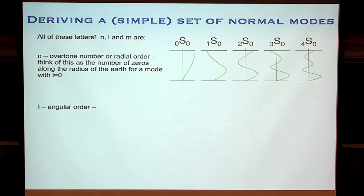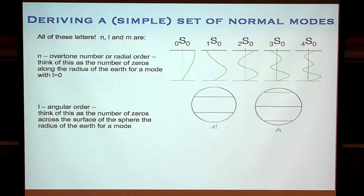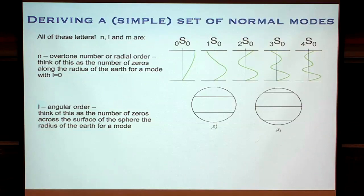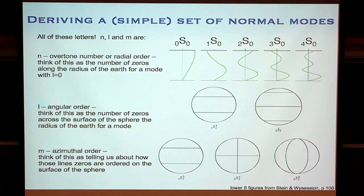L is the angular order — you can think of this as the number of zeros across the surface of a sphere. A mode with angular order two has two lines on the surface where nothing is happening. A mode with L of three has three such lines. M is the azimuthal order, which tells us how those lines where nothing is happening are organised on the surface of the sphere — giving you the stripy pattern, the crisscross, or the beach-ball arrangement.